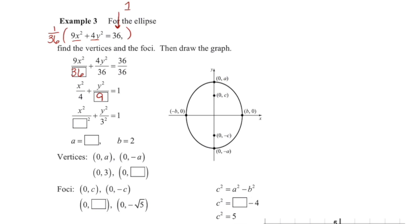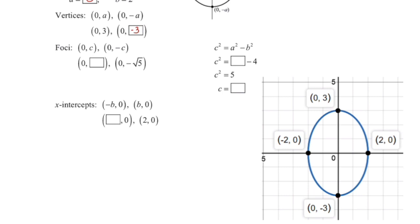Because my larger value is underneath the y squared, I know that this is going to be a vertical ellipse — it's going to go the large way up and down. I also want to replace these with 2 squared and 3 squared, because now I know my a value is 3 and my b value is 2. Substituting those into our formulas, our vertices are (0, 3) and (0, −3). Our foci require the c value, which we find using c squared equals a squared minus b squared, giving c squared equals 9 minus 4, so c equals the square root of 5. Our foci are (0, √5) and (0, −√5).